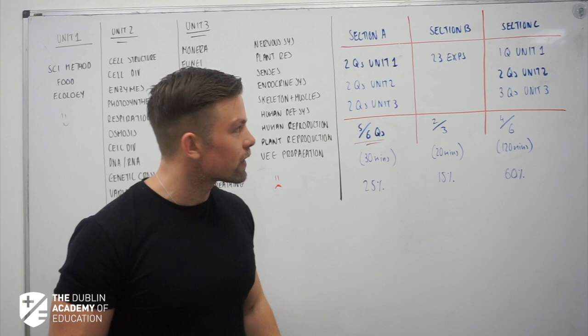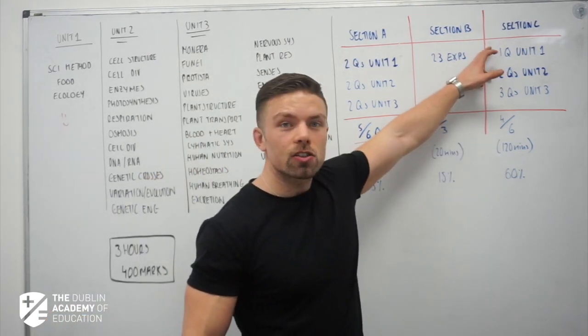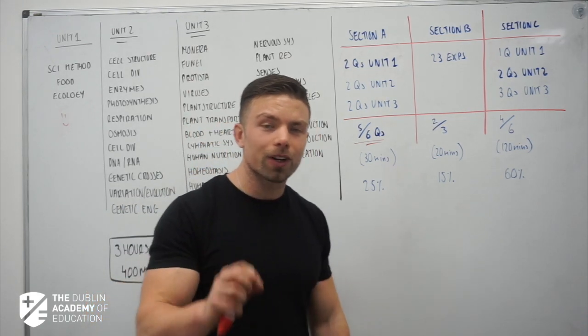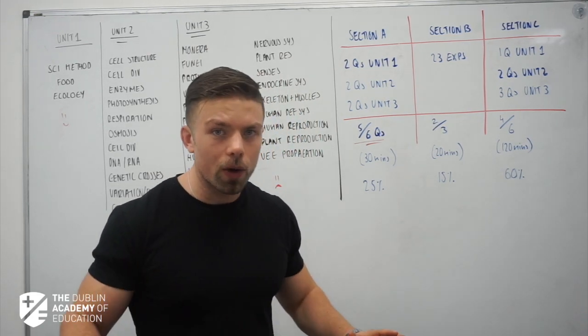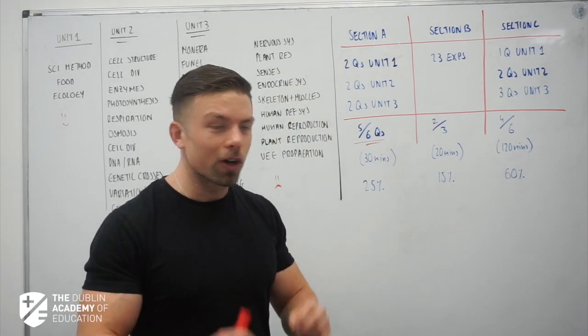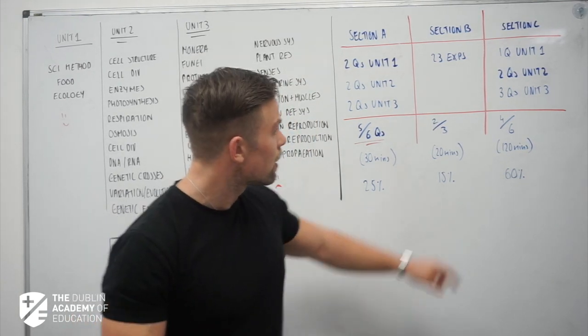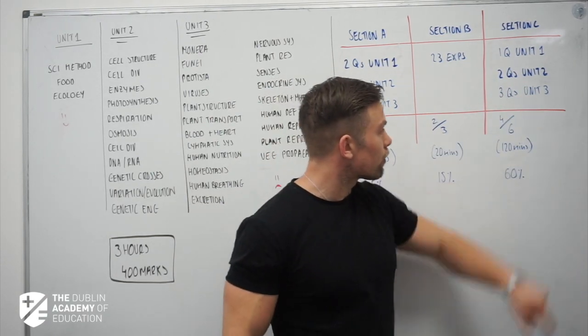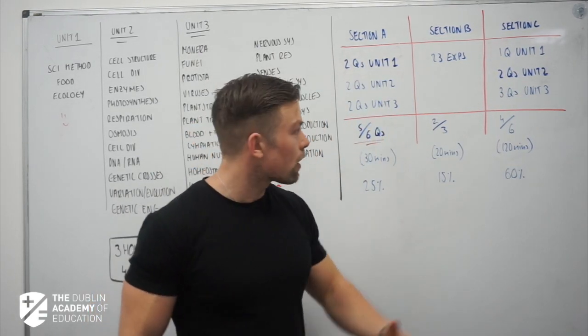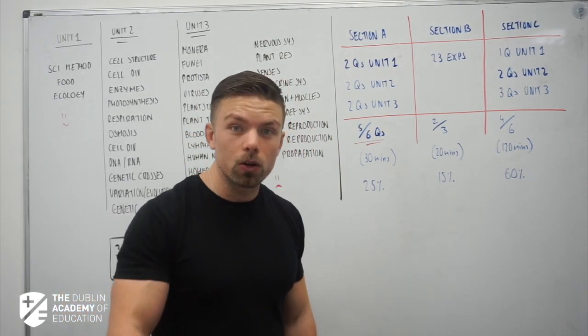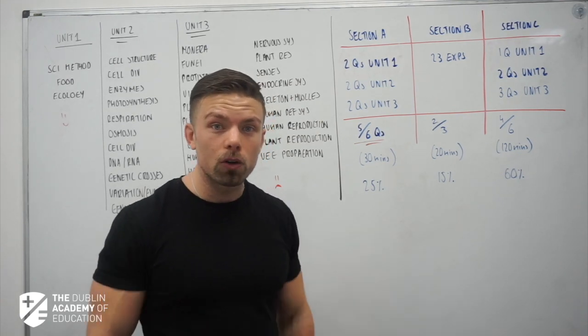And then Section C termed the long questions, but again they're all short questions. As examiners we're looking for key points. Absolutely no essays, in fact it will actually annoy your examiner if you write a long answer, so please don't do that. There's one question from Unit 1, two questions from Unit 2 and three from Unit 3, but you get a choice here of 4 out of 6. In fact in the last two questions there's even choice within those. So it's actually pretty fair if you look at it.